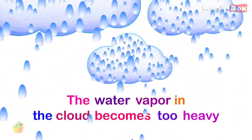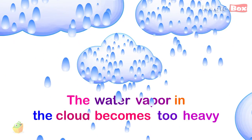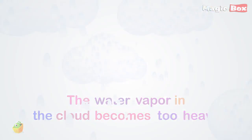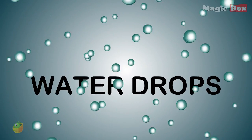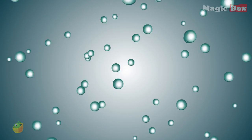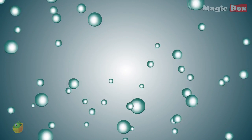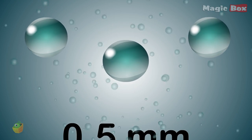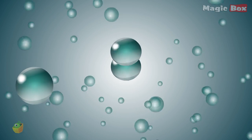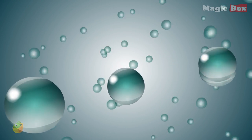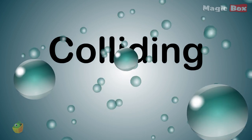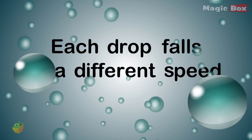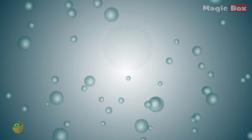When the water vapor in the cloud becomes too heavy, it falls back to the ground as rain or snow. Rain is restricted to drops of water that fall from a cloud. They have a typical diameter of at least 0.5 mm. The larger the cloud droplet, the better the chance of it colliding with a giant droplet, so each drop falls at a different speed as their sizes are different.